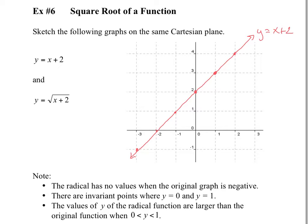All these y values are negative, which means when you take the square root of x plus 2, there won't be any value smaller than negative 2. We know that whenever y is equal to 0, you take the square root, you still get 0. When y is equal to 1, you take the square root of 1, you get 1. So that point won't change either. We call those invariant points — the square root of 0 is 0, the square root of 1 is 1, so those don't change.